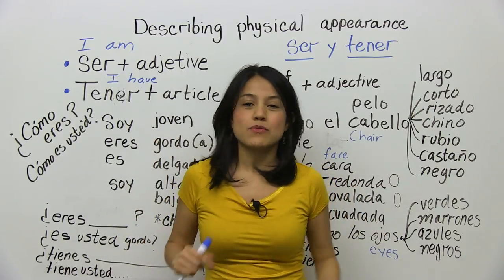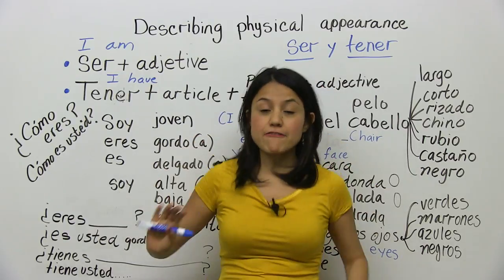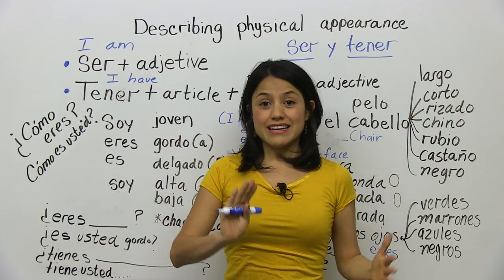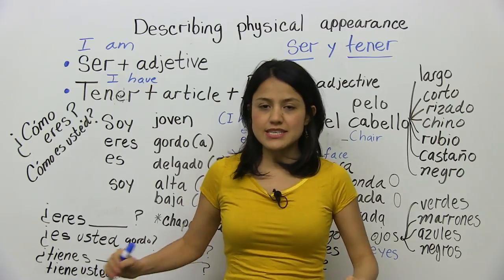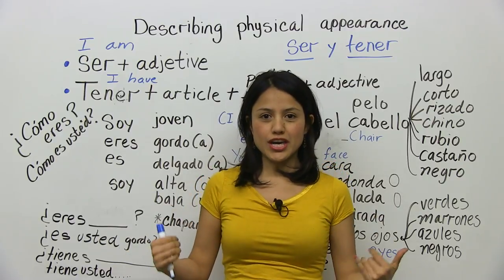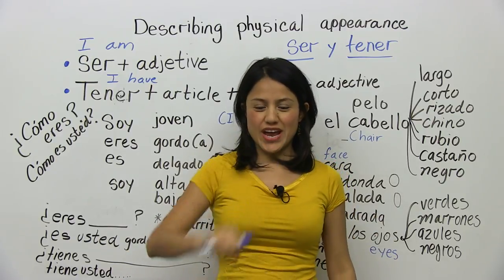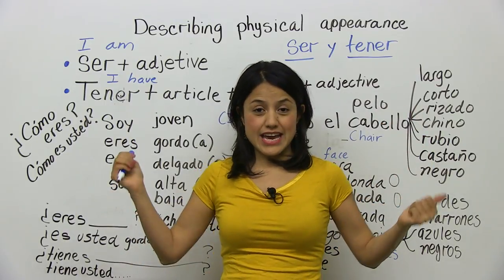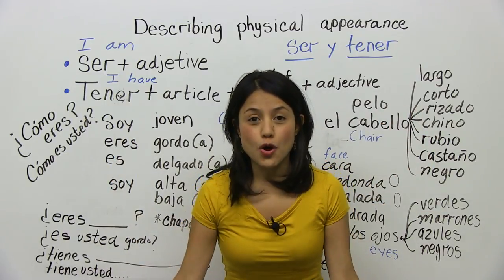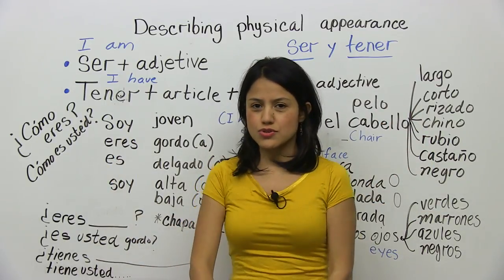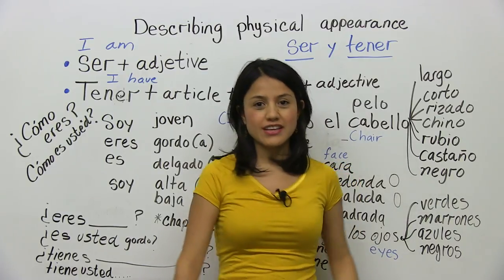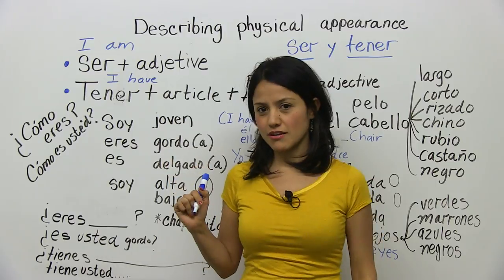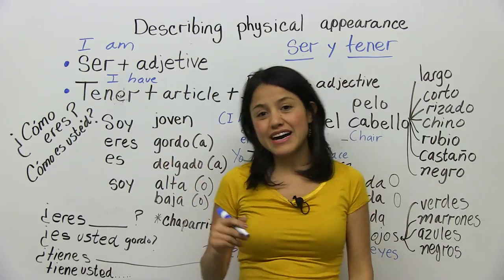Ser is an irregular verb — what does that mean? It just means that for every person it is conjugated, the verb is different. For instance: yo soy, tú eres, él es, ella es, usted es, nosotros somos, ustedes son, ellos son, ellas son. It changes with almost all of them, but it's easy.